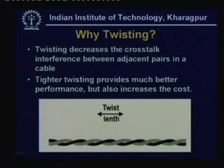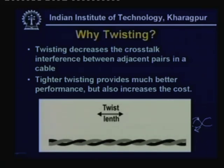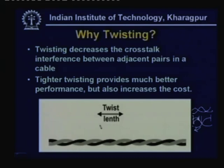How does twisting reduce crosstalk? Current flows in one direction in one wire and in the reverse direction in the other wire. When they are twisted together, the field induced by one wire is just opposite to the field induced by the other wire, so they cancel each other out. Similarly, if an adjacent pair acts as a transmitter, the signals induced on both parts of the twisted pair will be in opposite directions and cancel out. So twisting cancels out interference between adjacent pairs of wires, minimizing crosstalk.